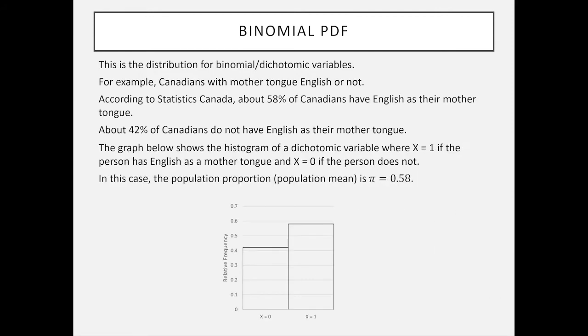We can look at this in terms of a dichotomous variable where x equals 1 if the person answers that English is their mother tongue and x equals 0 for any other answer. I've drawn the relative frequency here. The entire population all of Canada, so in actual fact this would be the proportion or the probability. The histogram is drawn here and put 58% or 0.58. We can call this pi because it's the population proportion.